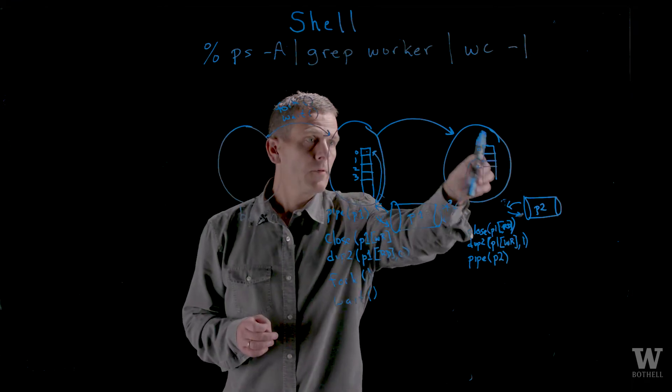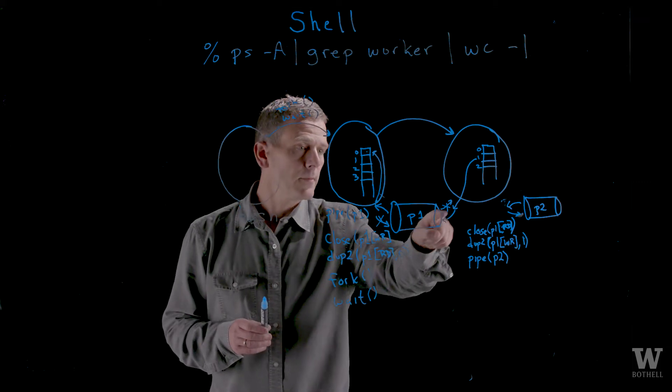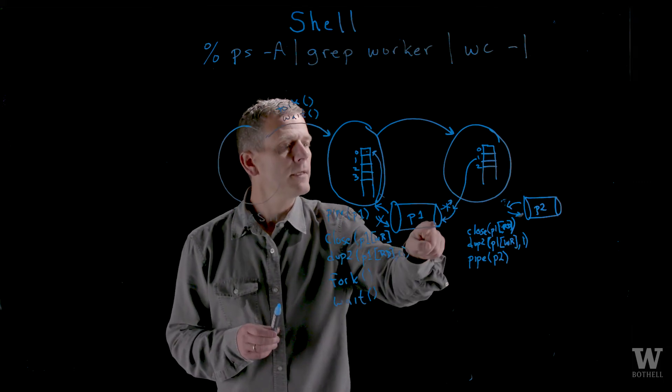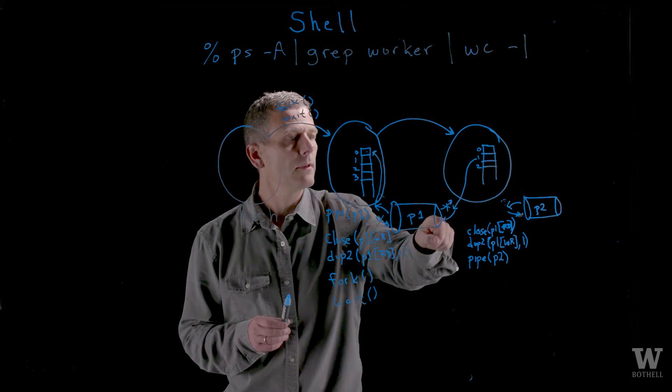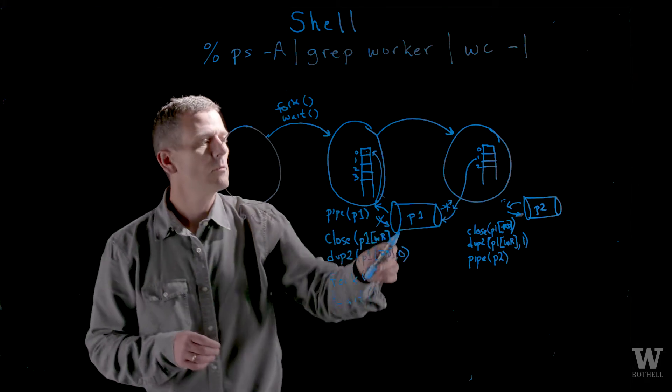With the fork, I create another process. And in that process, I close the read side of the pipe and dupe the right side of that pipe over to standard out. So the output of this process will go into the pipe.